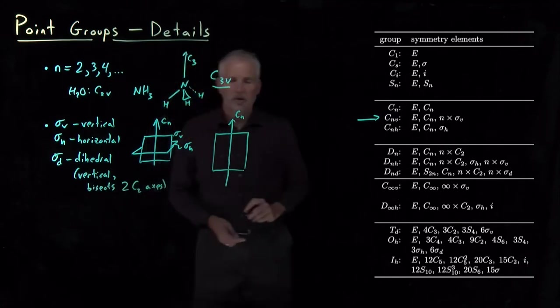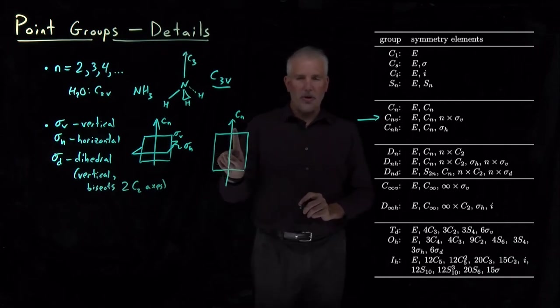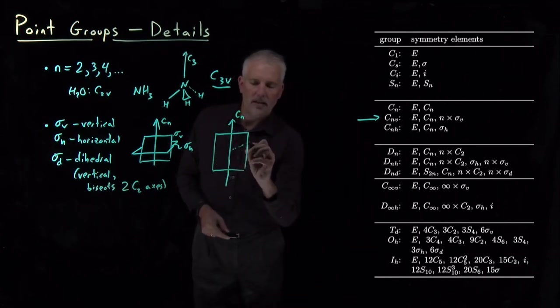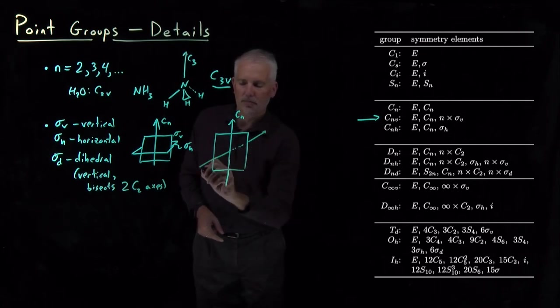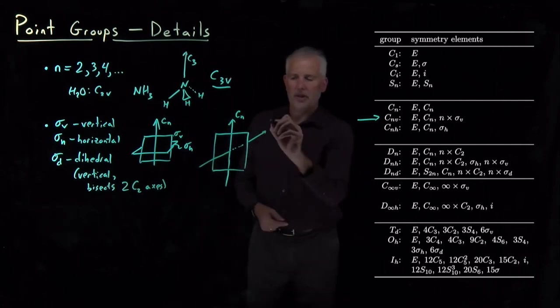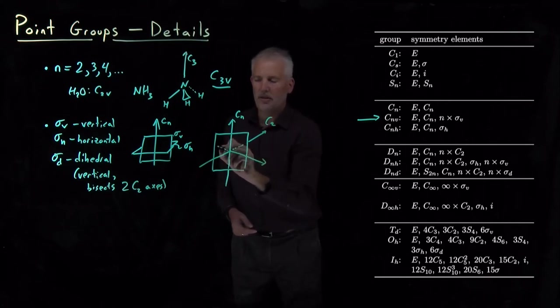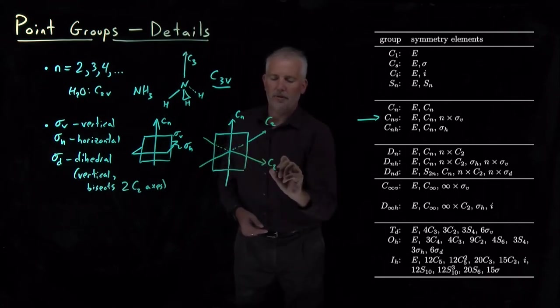If a molecule has a C2 or some other rotational axis, and it has a C2 axis pointing off in this direction, so here's the C2 axis, and also a C2 axis pointing off in that direction, so I've got two crossed C2 axes in addition to the vertical CN axis.